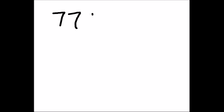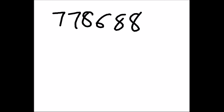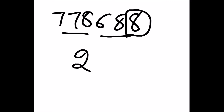Let us find the cube root of 778688. I'll divide it into two parts — 688 as one part and 778 as another part. Any perfect cube ending with 8 will have its cube root ending with 2. And 778 lies between 9 cubed and 10 cubed, so the answer is 92.